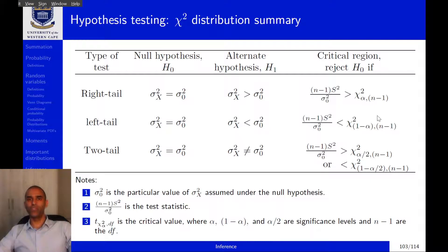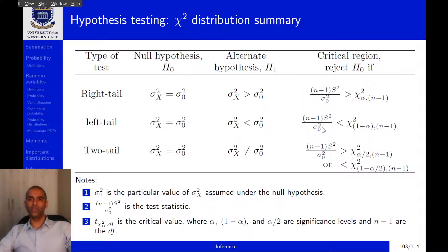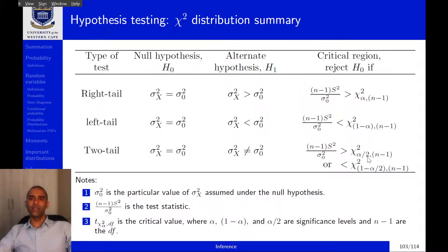The last column is really the main difference in notation. We reject H0 if the test statistic is larger than the critical value looked up in the chi-square table for a right-tailed test. For a left-tailed test, we reject when the test statistic is less than the critical value. For a two-tailed test, we reject if the test statistic is either larger than the right-side critical value or smaller than the left-side critical value.